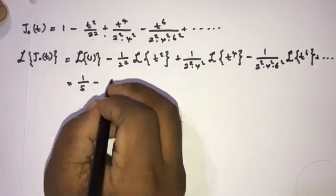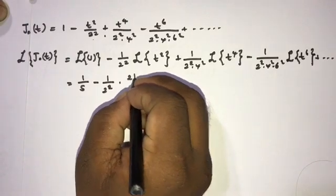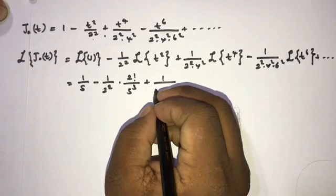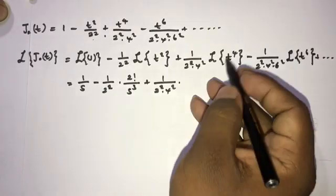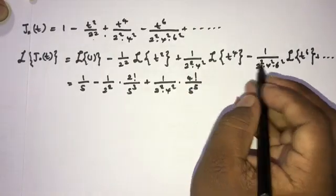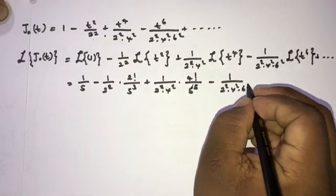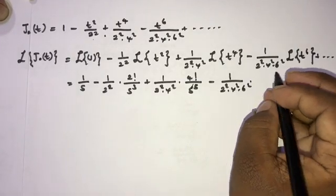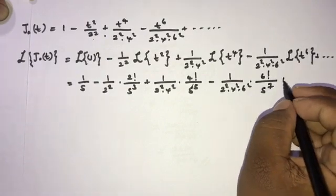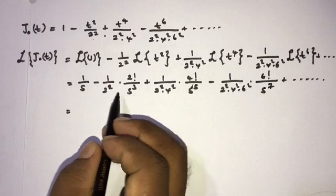Substituting the known Laplace transforms — L{1} = 1/s, L{t²} = 2!/s³, L{t⁴} = 4!/s⁵, L{t⁶} = 6!/s⁷ — we get: 1/s minus (1/2²)·(2!/s³) plus (1/(2²·4²))·(4!/s⁵) minus (1/(2²·4²·6²))·(6!/s⁷) plus and so on.